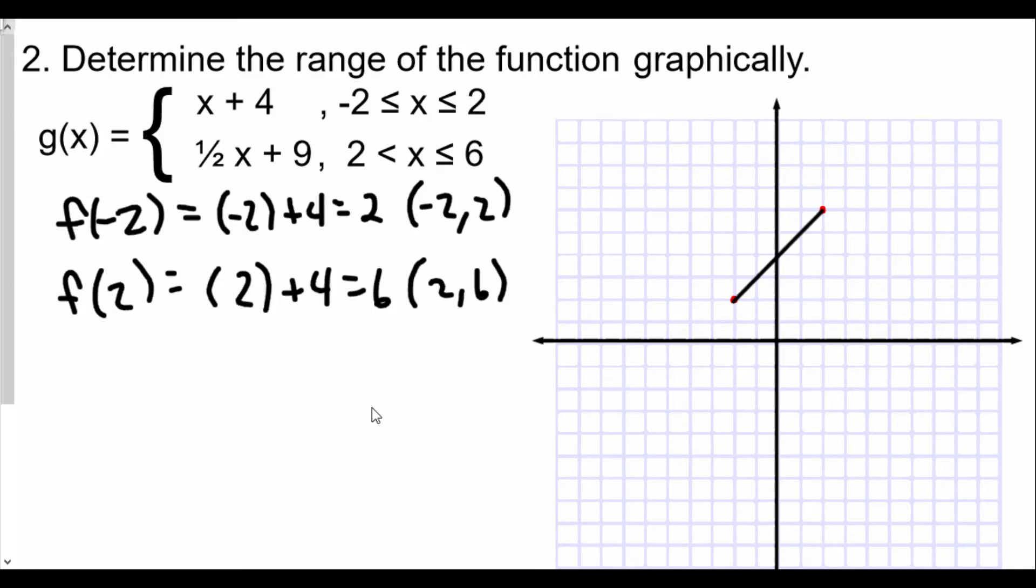The second part of the function deals with ½x + 9, but only for values of x greater than 2 and less than or equal to 6. When I find f(2), these two previous points were closed dots because they included the endpoint. This one's going to be an open dot because x is greater than 2 but not equal to 2. Now if we plug in 2, we have ½ times 2 plus 9.